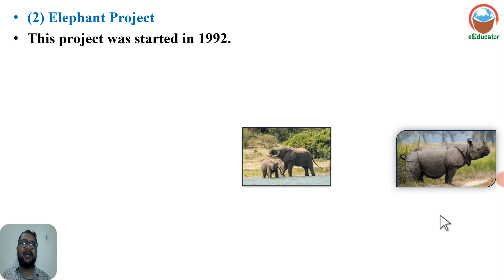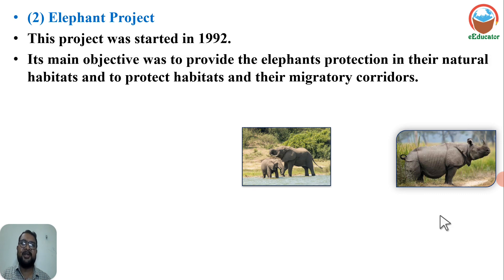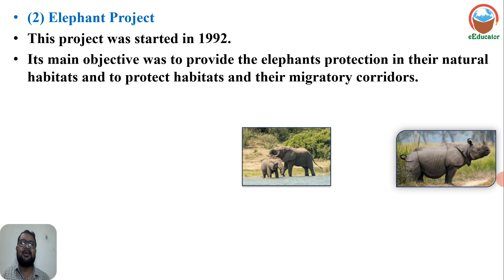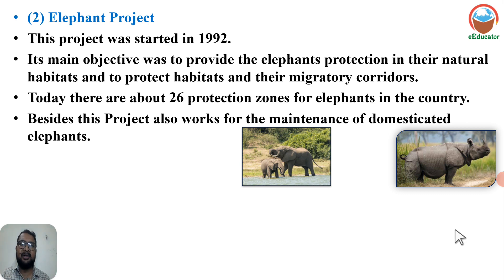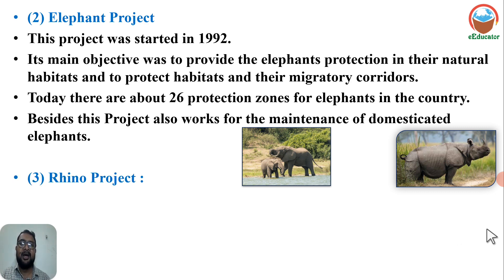Elephant Project: This project was started in 1992 for the protection of elephants. Its main objective was to provide protection to elephants in their natural habitats and to protect their migratory corridors, since elephants migrate and those corridors must be maintained. Today there are about 26 protection zones for elephants in the country. Besides this, the project also works for maintenance of domesticated elephants.